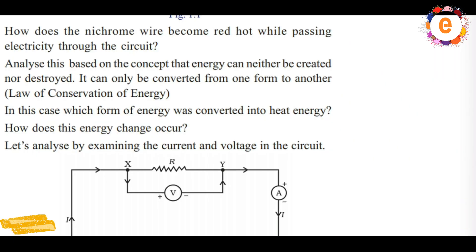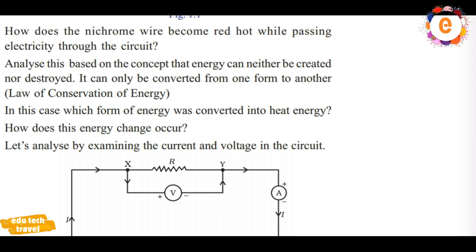How does the nichrome wire become red hot while passing electricity? Analyze this based on the concept that energy can neither be created nor be destroyed. It can only be converted from one form to another.